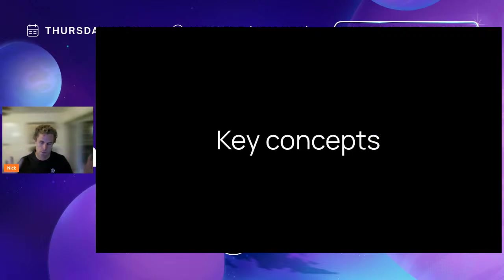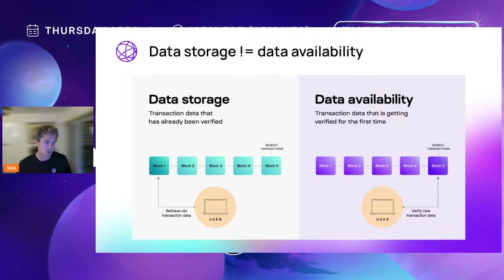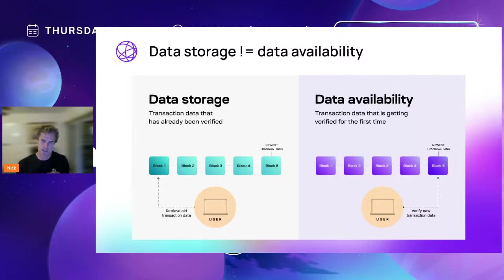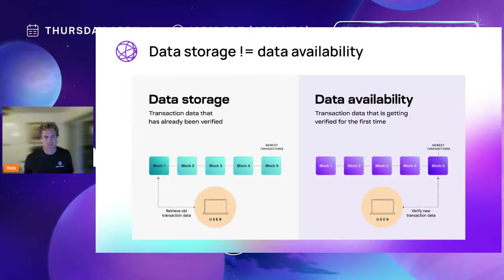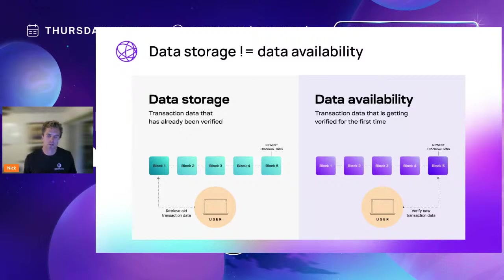Now let's talk about key concepts. One thing people always get wrong about modular blockchains is thinking that data availability means data storage — that is not the case. The name sounds like storage, and we thought about trying to change it, but it's a technical term that's stuck. Data availability is probably better thought of as data publishing.